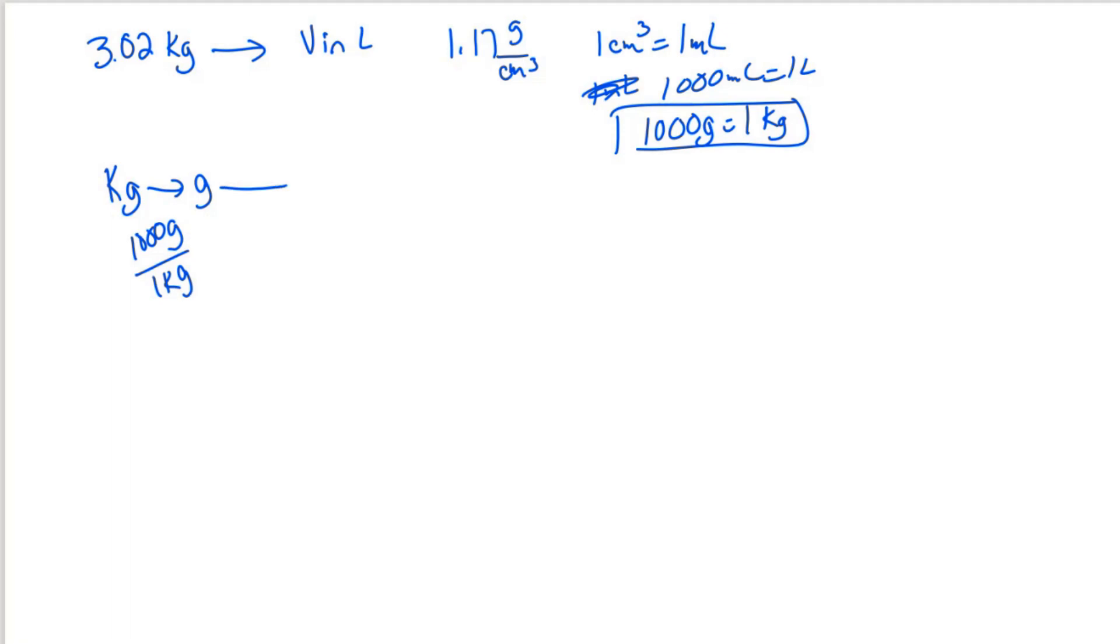To convert grams to volume, we're going to use the density. So we can convert grams to milliliters with our density, 1.17 grams per cubic centimeter, which is the same thing as 1.17 grams per milliliter.